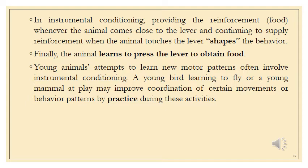Young animals often learn new motor patterns through instrumental conditioning. Because they are not yet experienced in their specific environment, they learn from instrumental conditioning — whenever they move and receive food or a specific reinforcement, they repeatedly use that voluntary action. A young bird learning to fly or a young mammal at play may improve coordination of certain movements and behavioral patterns by practicing during these activities.